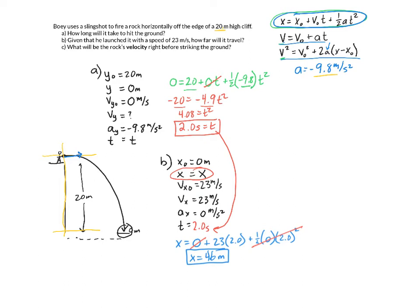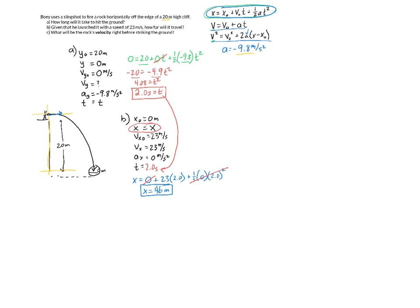What will the rock's velocity right before striking the ground? So the ball, the rock is coming down, and it's going to strike the ground, and we want to know what is its velocity right before it hits. Now, in order to do that, we're going to need two things. We need to know what is its horizontal velocity, and we need to know what is its vertical velocity. If we know the components, the vertical and horizontal components, I can find the actual velocity that it's striking the ground.